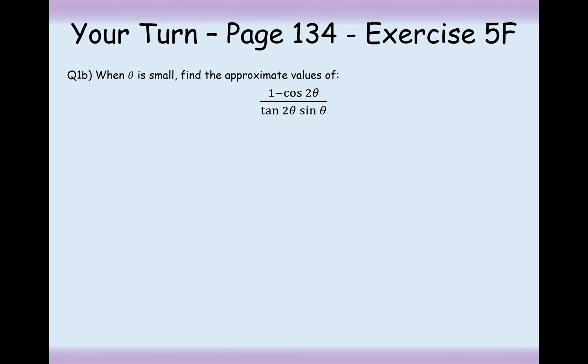Your turn to have a go at a question here now. Pause the video and try this one out. Alright then, so let's have a go at this. So it's going to be 1 minus, and then cos is the weird one, so it's going to be 1 minus theta squared, 2 theta squared over 2, all divided by tan 2 theta, which is just 2 theta, and sine theta, which is just theta. Now expanding the brackets on the top, it's 1 minus 1 plus 4 theta squared over 2, all over 2 theta squared. Cancelling out the 1's and the minus 1's, and simplifying the numerator, 2 theta squared over 2 theta squared, which will all cancel out just to make 1.